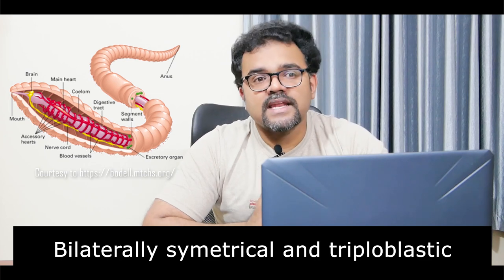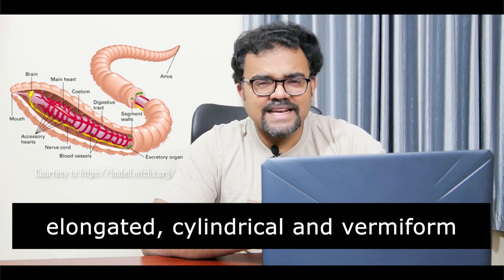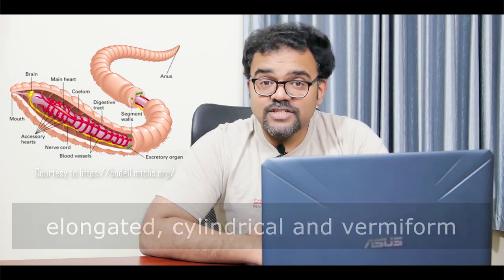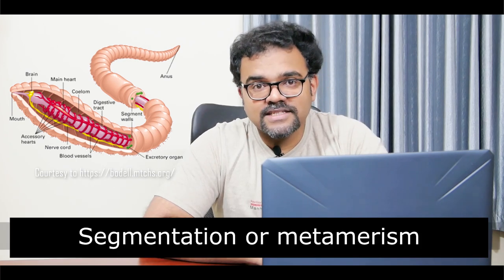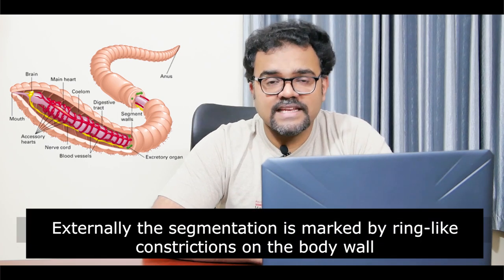Now we will move on to the salient features of Phylum Annelida. Annelids are bilaterally symmetrical and triploblastic animals. The body is cylindrical, elongated, and vermiform. The body shows segmentation or metamerism — that is, the body is divided into numerous segments called metameres along the anterior-posterior axis. The segmentation is exhibited both externally and internally.